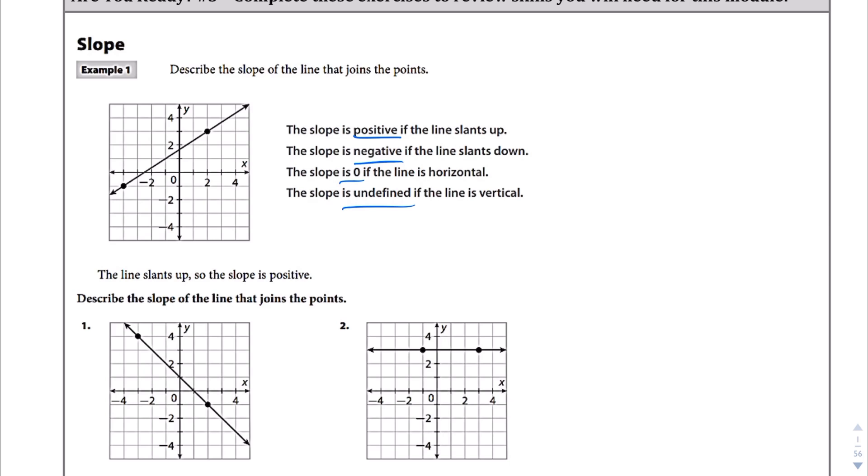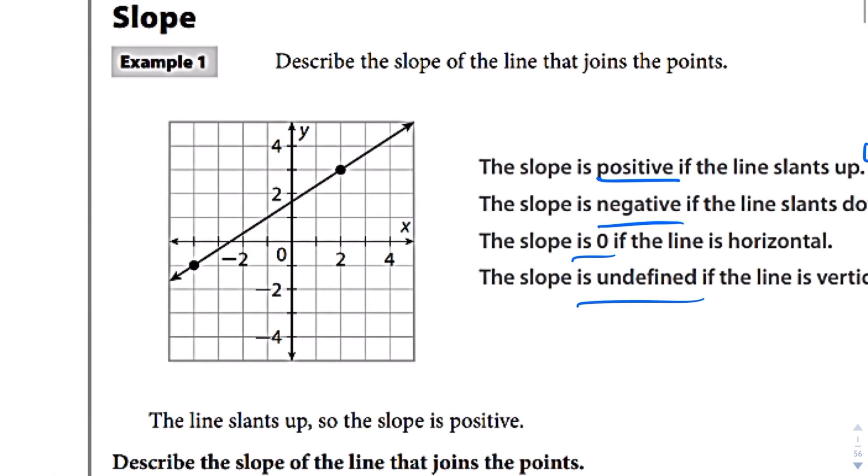We are told that the slope is positive if the line slants up. So you might ask yourself, how do you know that it's slanting up? Well, in the Western world, we read from left to right. So if we look at the graph of example number 1, we're going to start here. That's our starting point, and as we can see, when we read left to right, this line is going to generally trend upward. So what that means is that the slope is going to be positive.